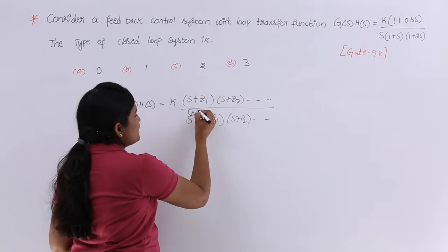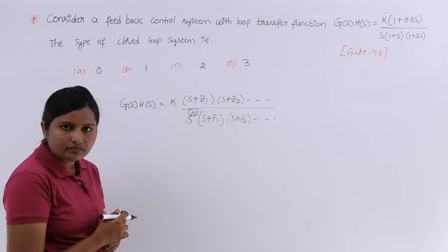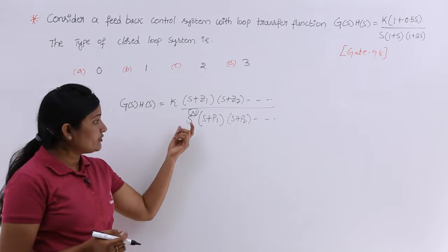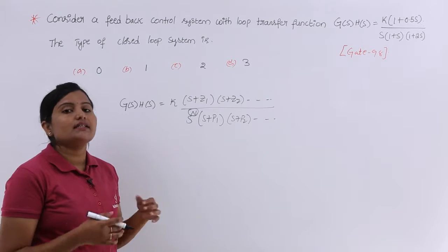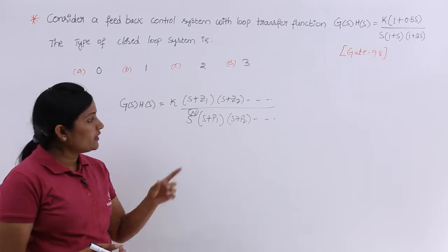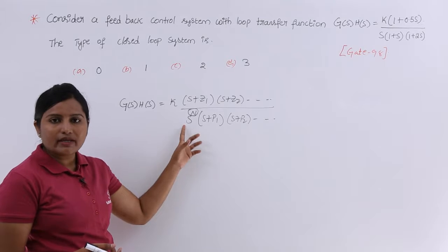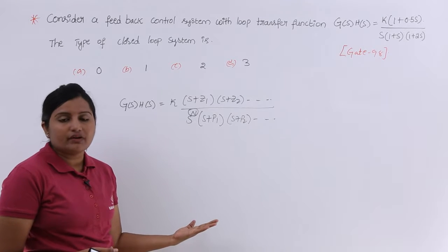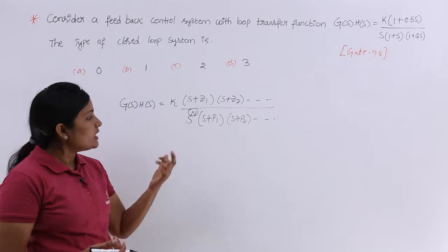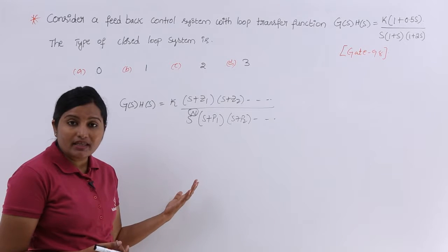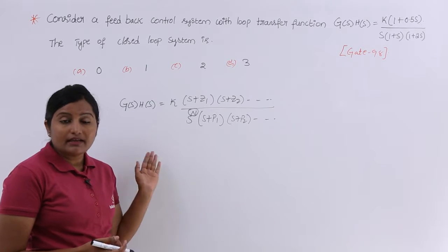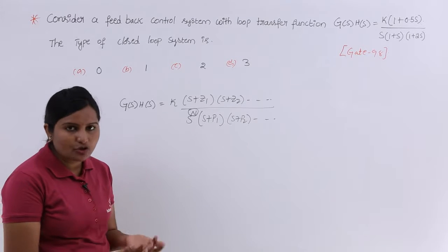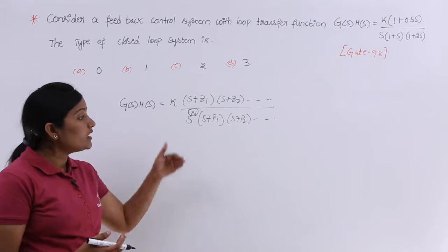Here, n indicates the type number of the system. If n equals 0, meaning there is no s term, then it is a type 0 system. If s power 1 is present, n equals 1, so it is a type 1 system. If s squared is there, n equals 2, that is a type 2 system. If s cubed is there, it is a type 3 system.